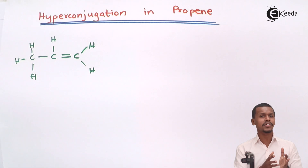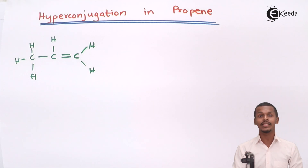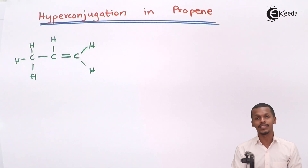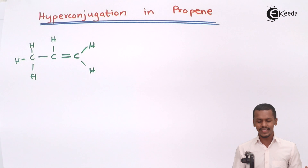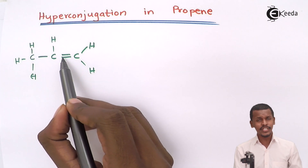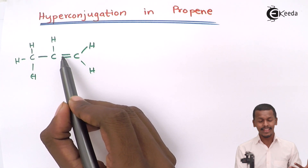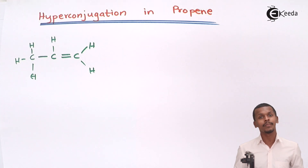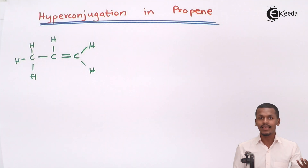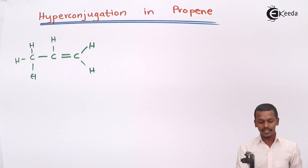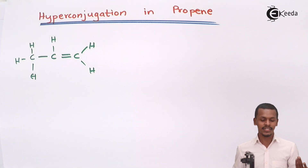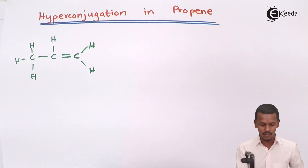Hyperconjugation is nothing but the delocalization of the sigma bond electrons present between carbon and hydrogen. Here we can see there is unsaturation, meaning there is a carbon-carbon double bond present, which means hyperconjugation will occur in this case also. So suppose we are shifting or delocalizing the electrons.